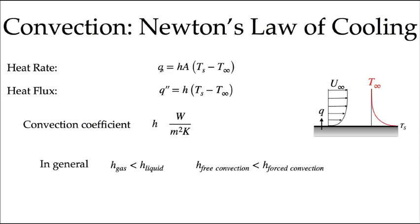In general, if the fluid is a gas the convection coefficient will be smaller than if the fluid is a liquid. Likewise, free convection — motion driven by buoyancy forces — produces lower convection coefficients than forced convection, where a fluid is driven across a surface at velocity u-infinity. Convection coefficients for gases are on the order of 10 W/m²·K and can reach hundreds or thousands for liquids. Free convection coefficients are on the order of tens, while forced convection coefficients can reach well into the thousands and beyond.